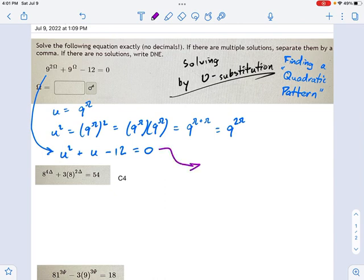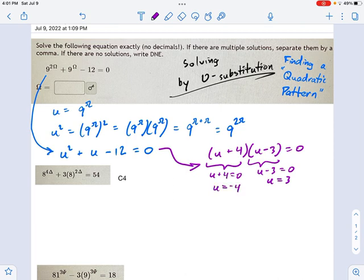How do we factor u² + u - 12? Well, that's (u + 4)(u - 3) = 0. And we set each of these equal to 0, right? u - 3 = 0, that means u = 3. And for this one, that's u + 4 = 0, so that's u = -4.